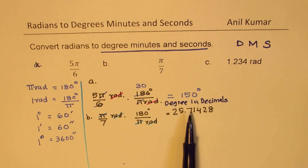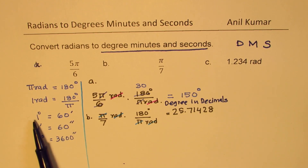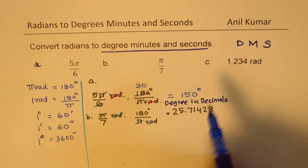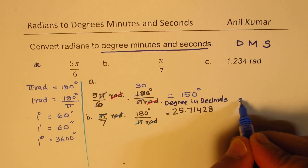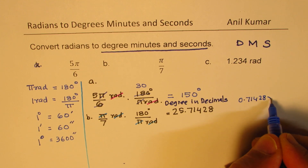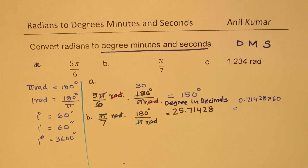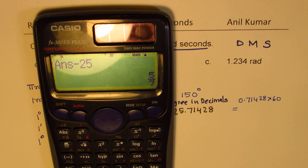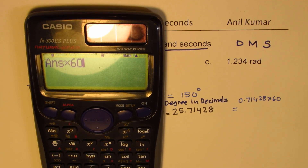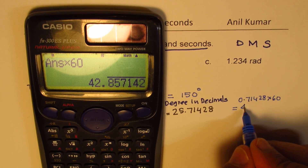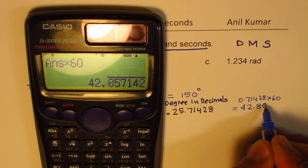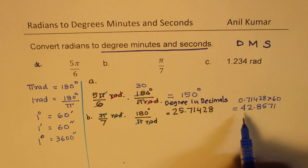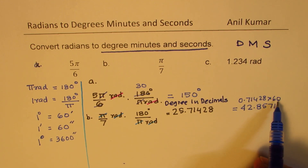To convert the decimal part to minutes, we multiply 0.71428 by 60. We take away the 25 whole degrees and multiply the decimal part by 60, which gives us 42.8571. So we have 42 minutes and a decimal remainder.